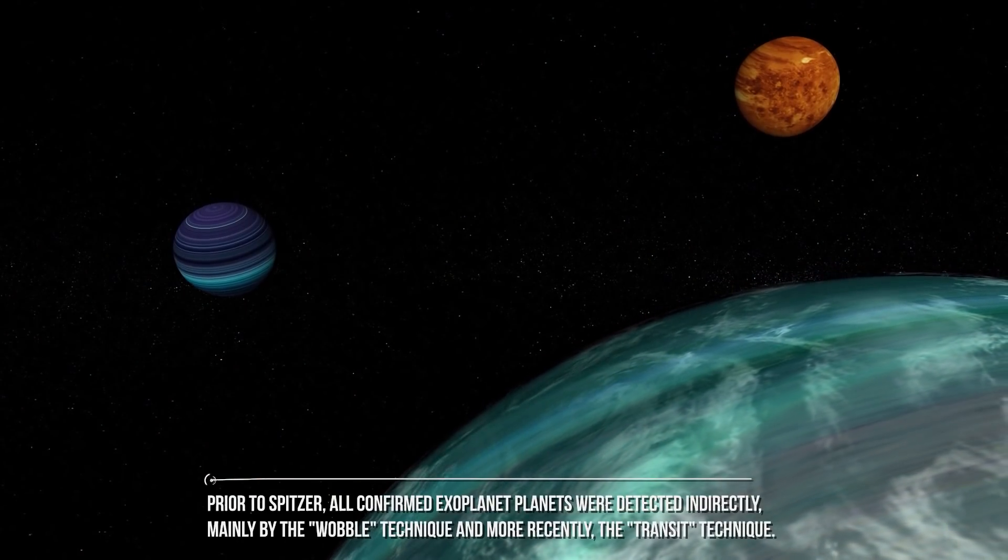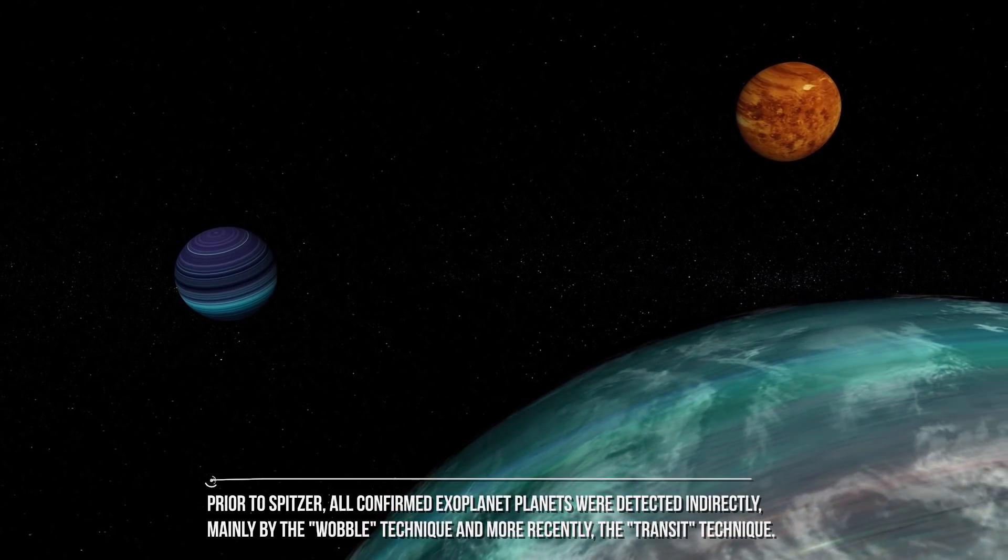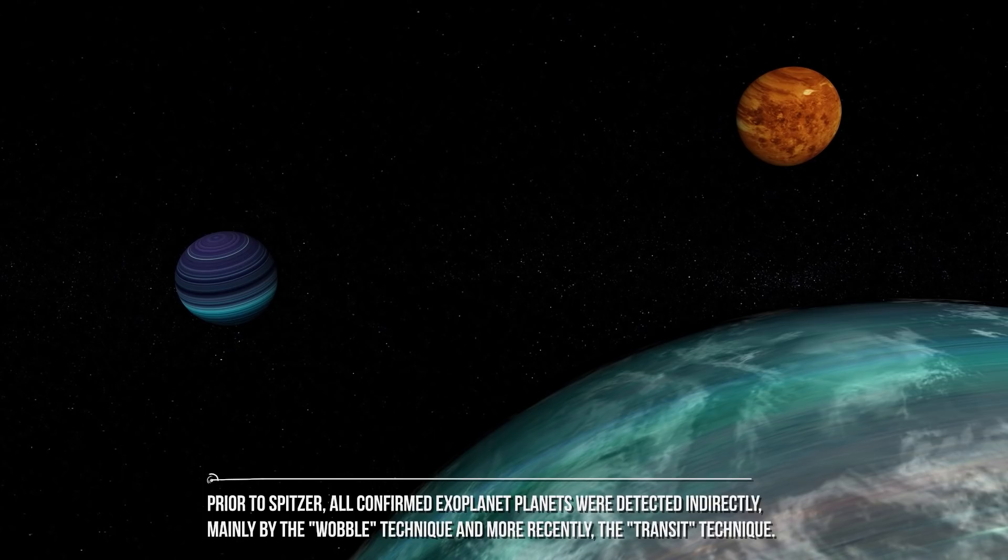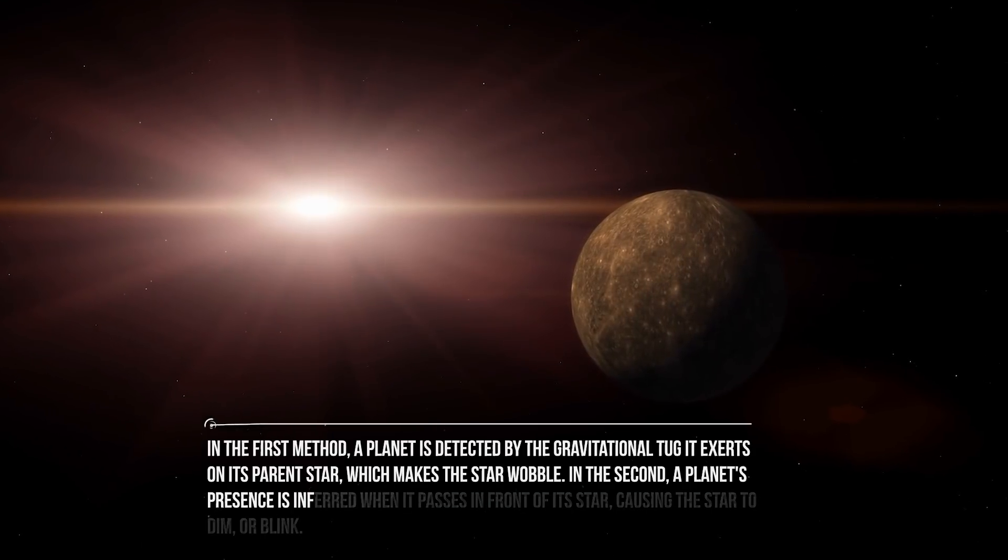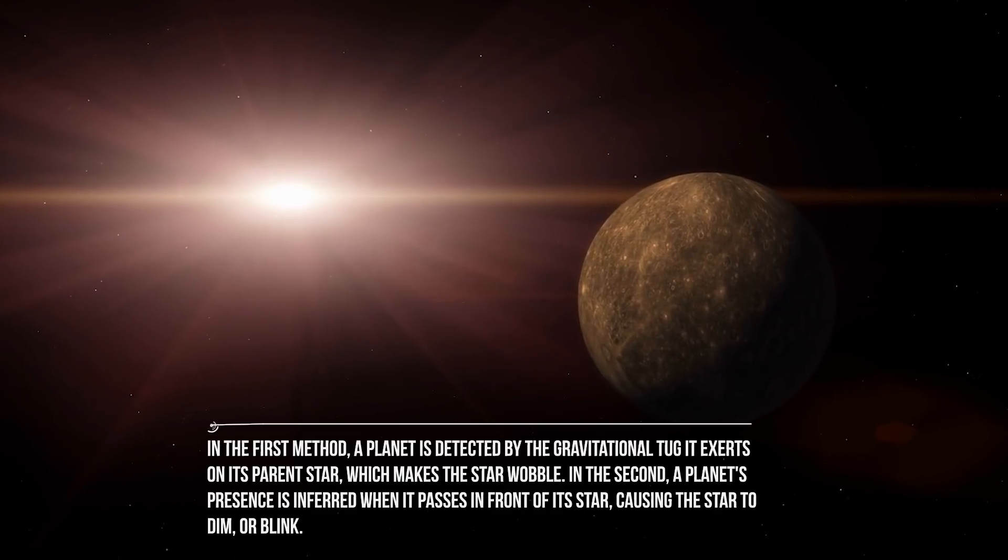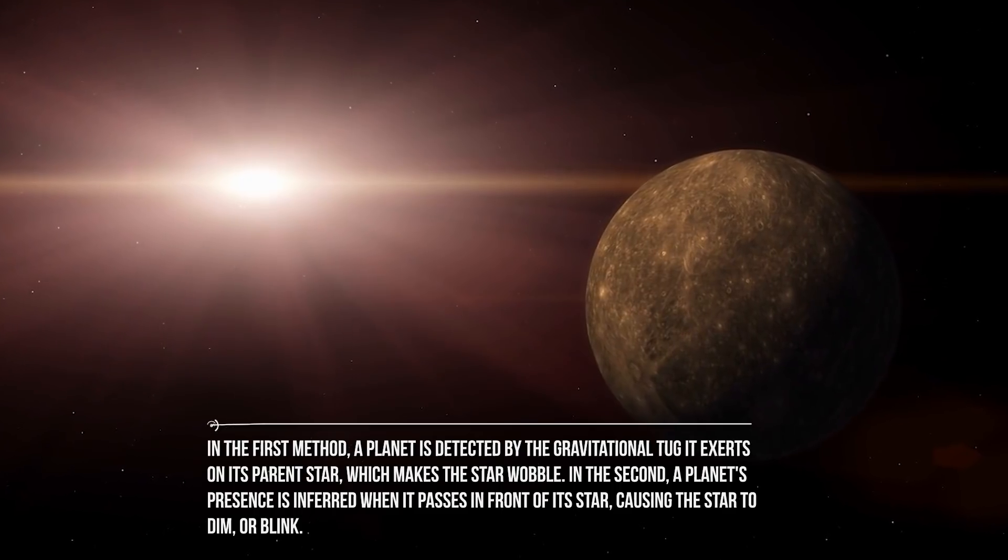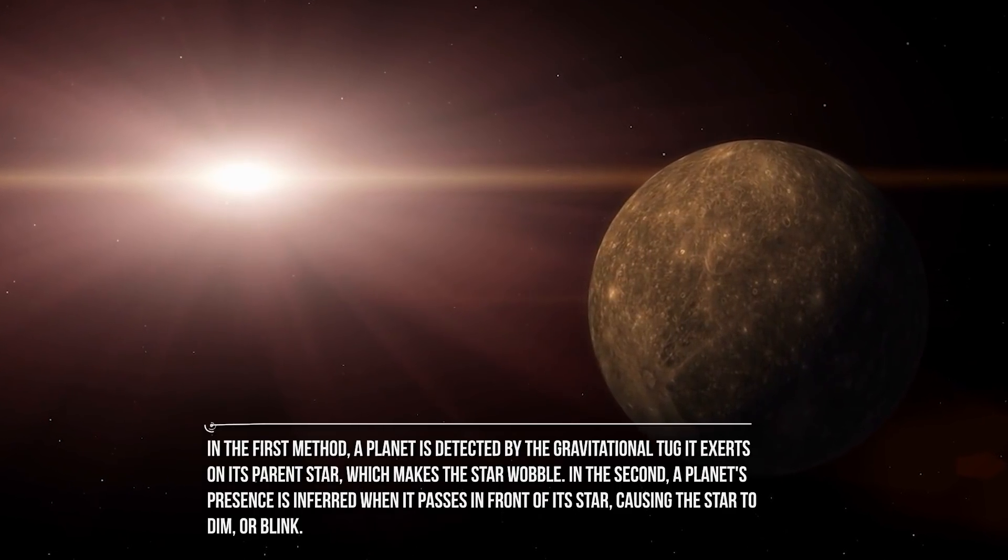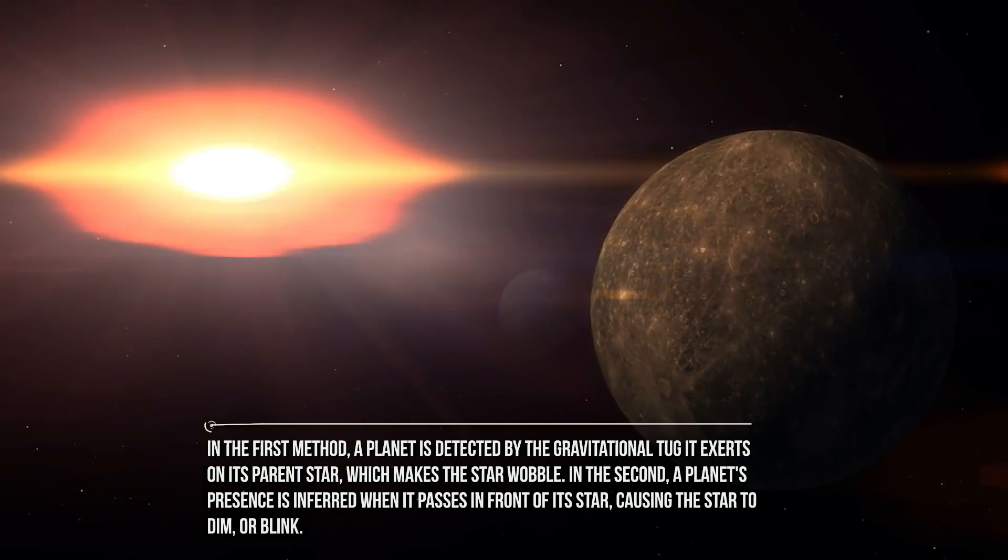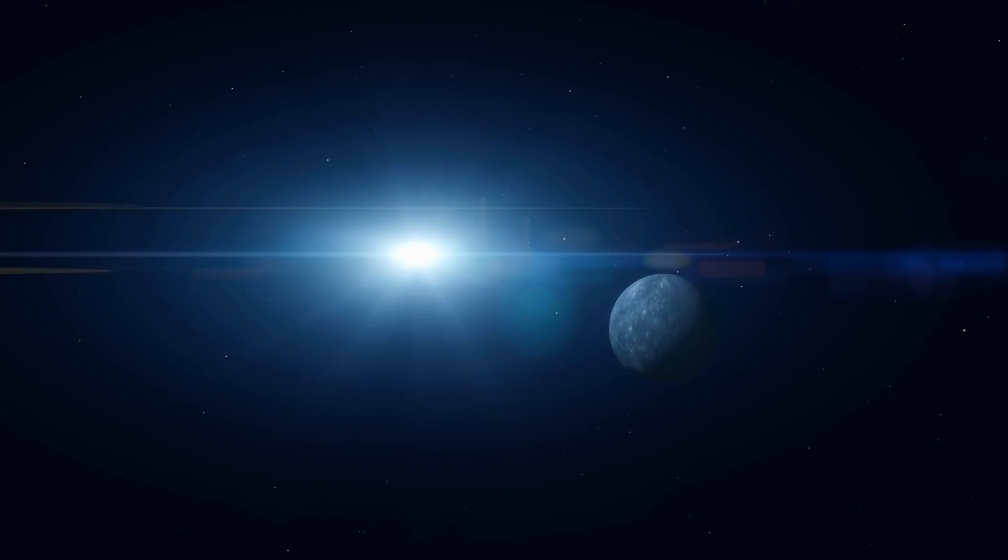The Great Infrared Observatory also made it possible to determine the temperatures, winds, and atmospheric compositions on these distant planets. Prior to Spitzer, all confirmed exoplanets were detected indirectly, mainly by the wobble technique and, more recently, the transit technique. In the first method, a planet is detected by the gravitational tug it exerts on its parent star, which makes the star wobble. In the second, a planet's presence is inferred when it passes in front of its star, causing the star to dim or blink. Both strategies use visible light telescopes and indirectly reveal the mass and size of planets, respectively.